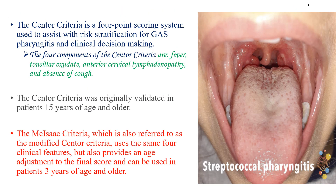The Centor criteria is a four-point scoring system used to assist with risk stratification for group A streptococcal pharyngitis and clinical decision-making. The four components are fever, tonsillar exudate, anterior cervical lymphadenopathy, and absence of cough. The Centor criteria was originally validated in patients 15 years of age and older, and was later modified — called the modified Centor criteria.